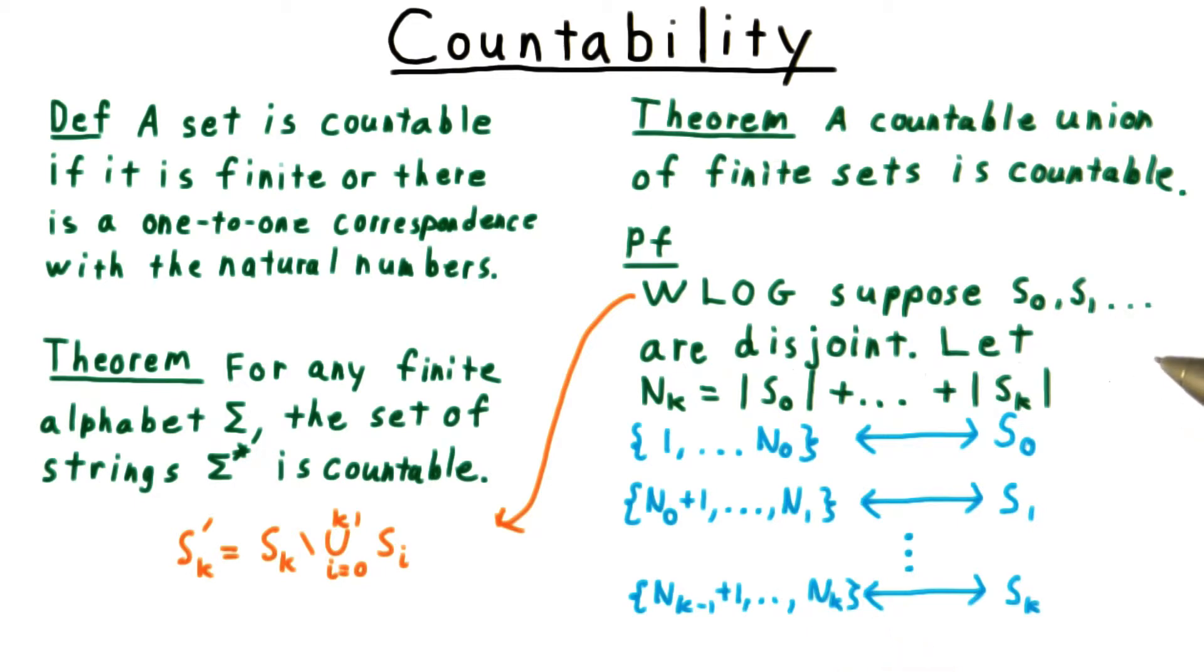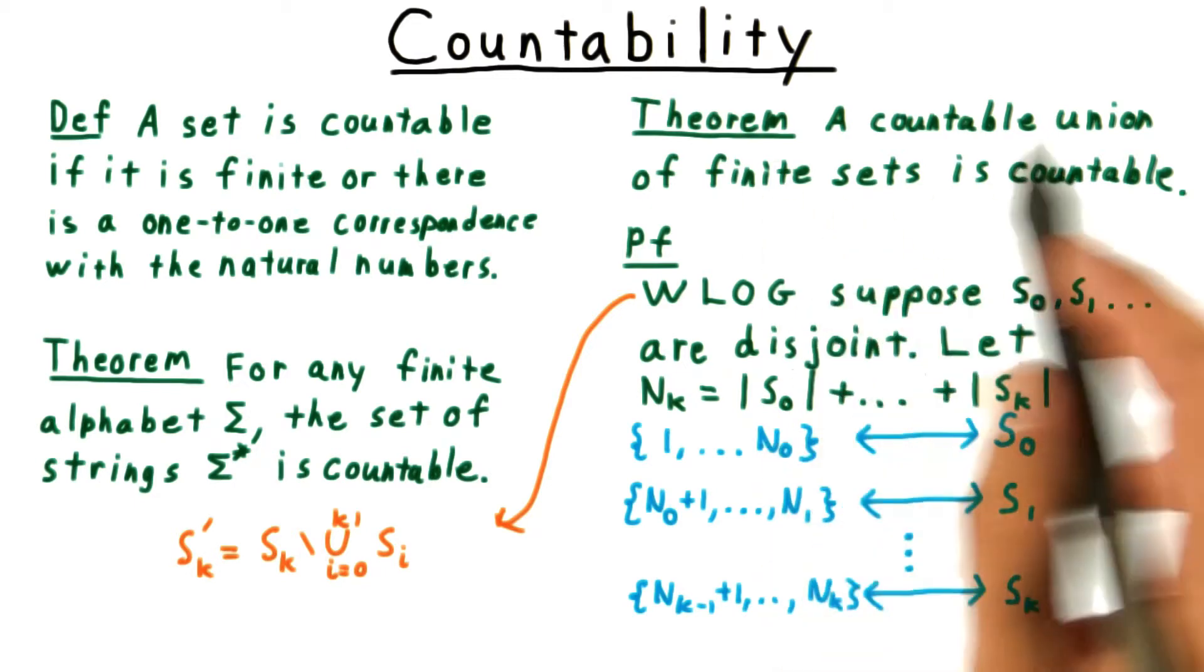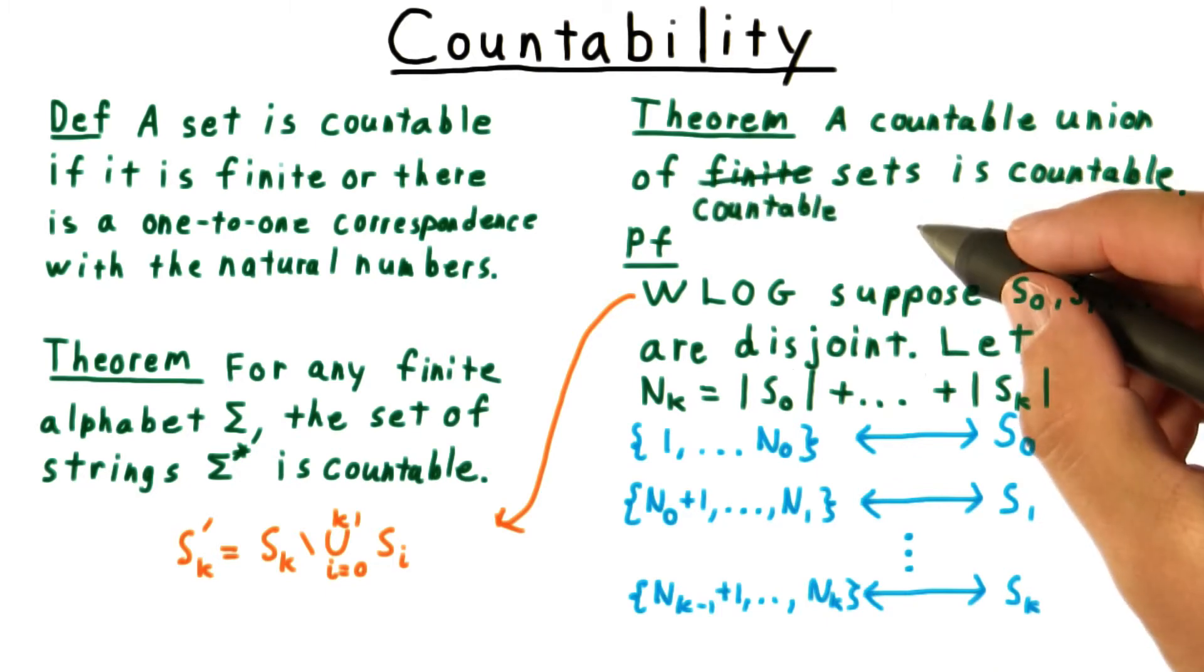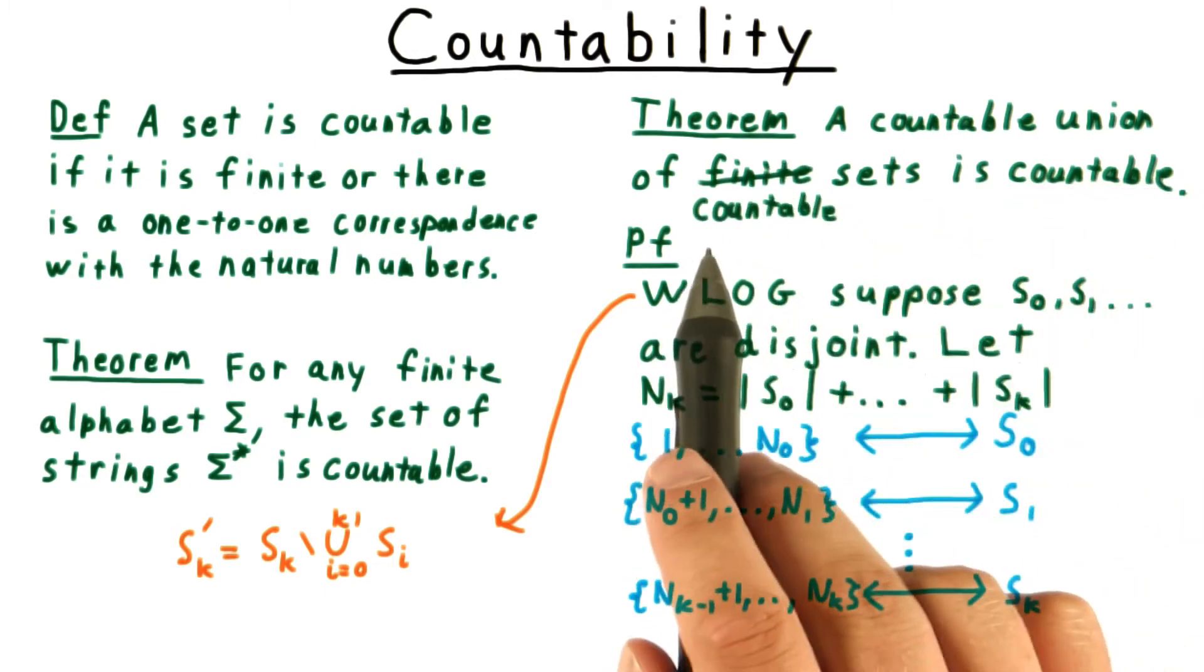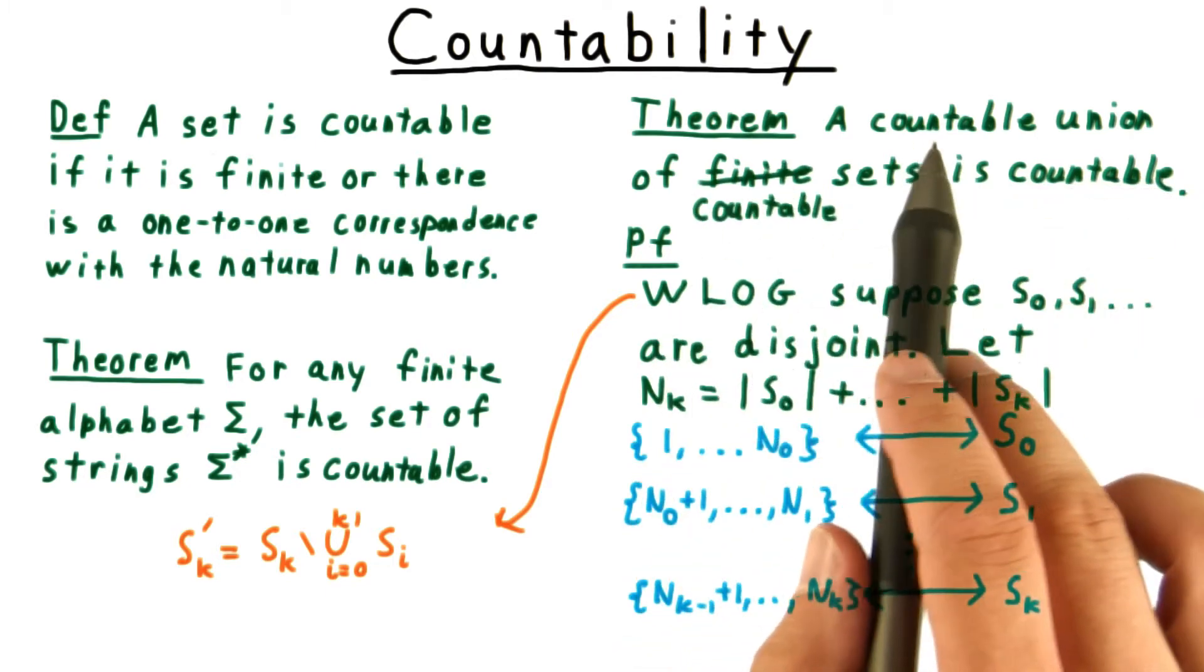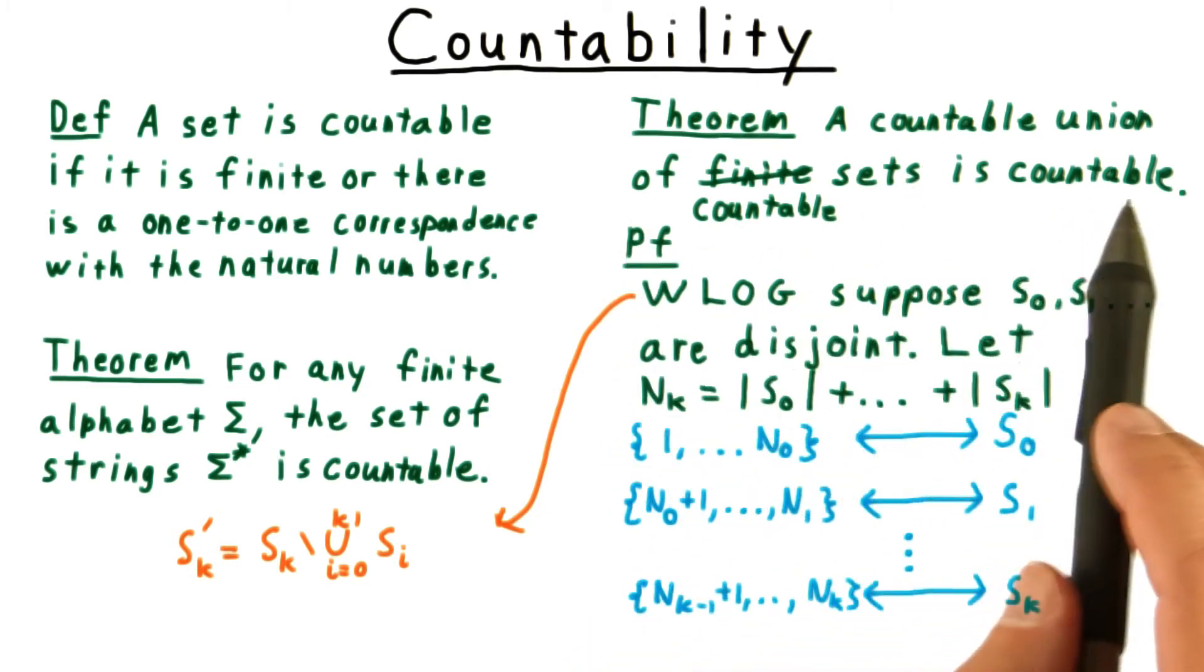Now it turns out that we can actually prove something even stronger than the original statement here. We can replace the word finite with the word countable, and say that a countable union of countable sets is countable. Notice that our current proof doesn't work.